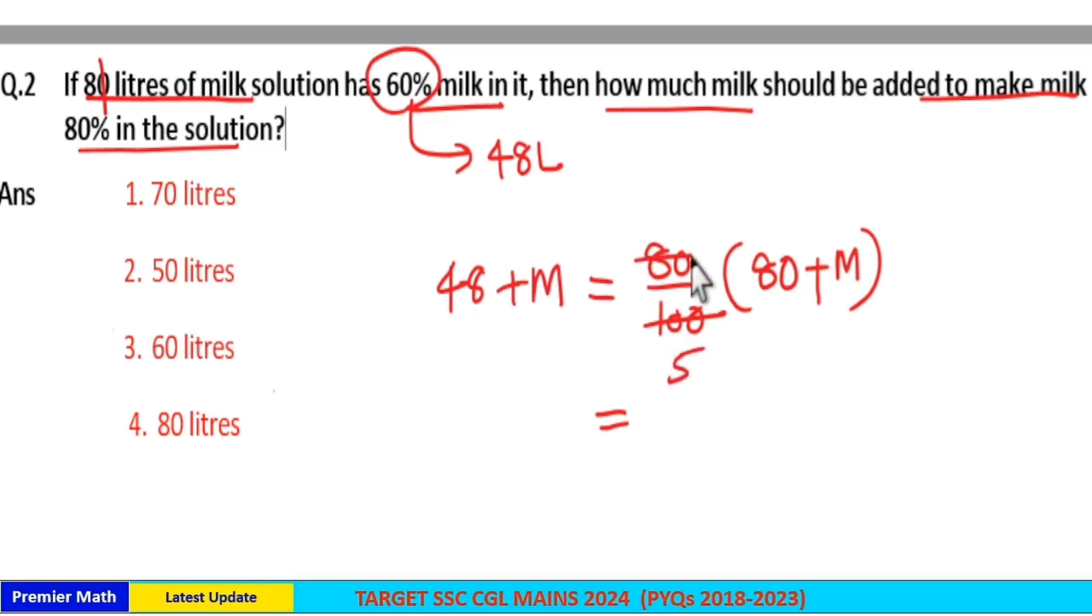Now 20 goes 5 times in 100, 20 goes 4 times in 80. M minus 4 by 5 M is equal to 1 minus 4 by 5, which is 1 by 5. So 1 by 5 M is equal to 5 goes 16 times in 80.